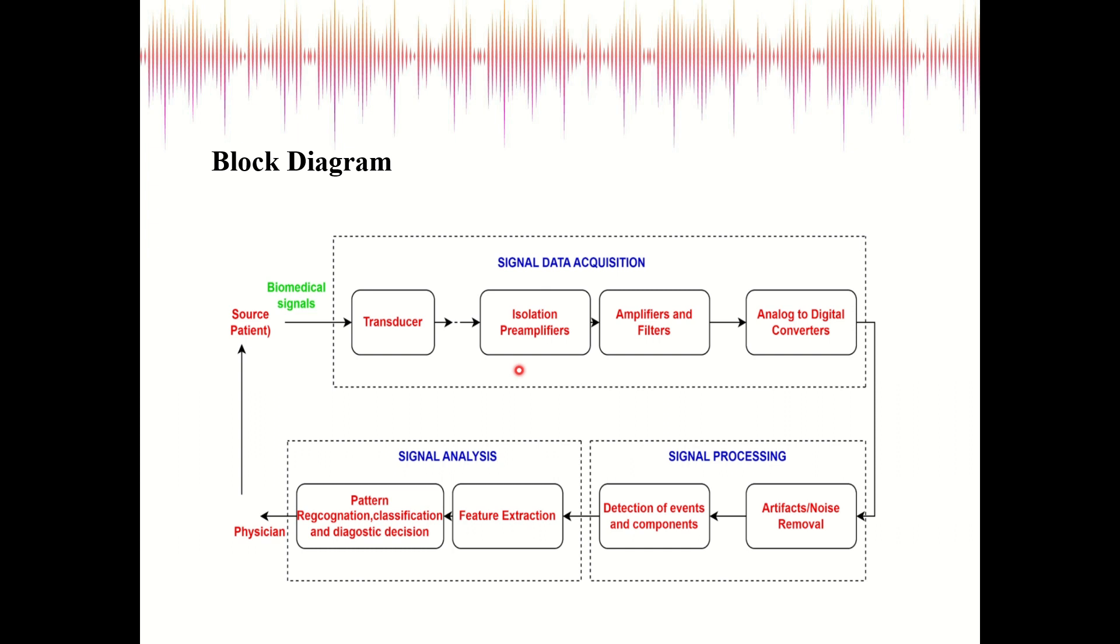Then it is followed by the amplifiers and filters which will provide necessary initial amplification and filtering of the signal. Then we have the analog to digital converter. As we know that nowadays we are focusing on the digital method to process the signal, and thus this conversion is important since there are numerous advantages of digital signals.